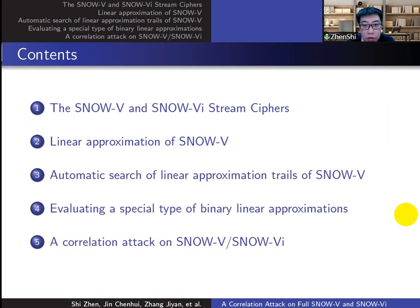I will make the presentation from the following five aspects: the brief description of SNOW-5 and SNOW-6, the way to find the linear approximations of SNOW-5, the automatic searching tool we use, a class of binary linear approximations of SNOW-5, and the correlation attack on full SNOW-5 and SNOW-6.